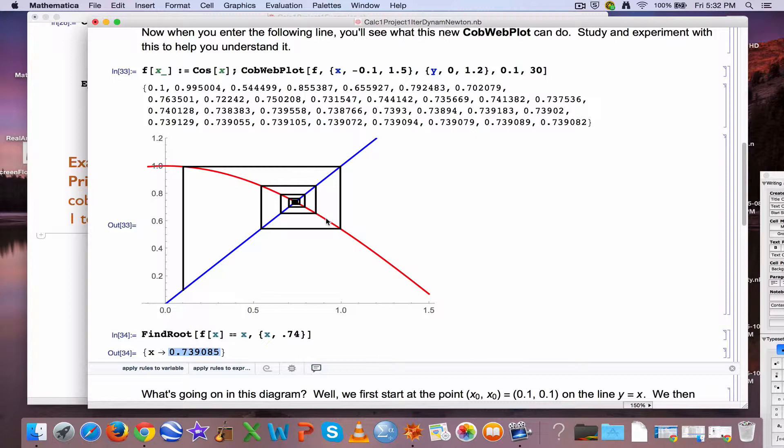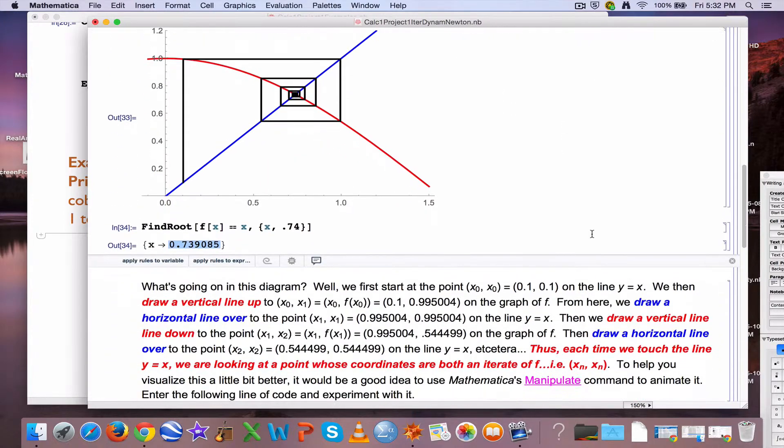There are also repelling fixed points. They're harder to approximate. You'd have to start real close to the repelling fixed point to see the values, but the iterates would, generally speaking, be going away from the repelling fixed point.